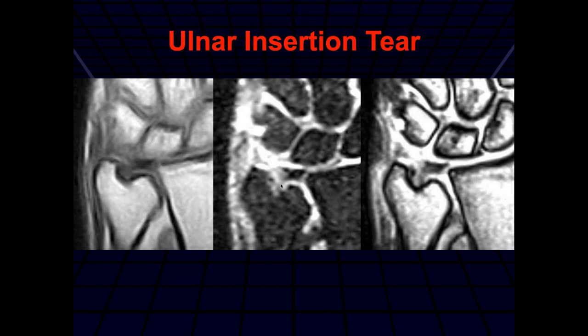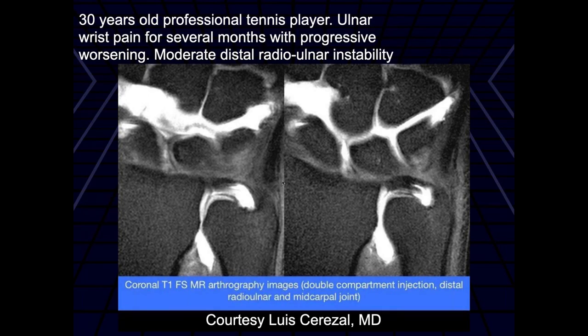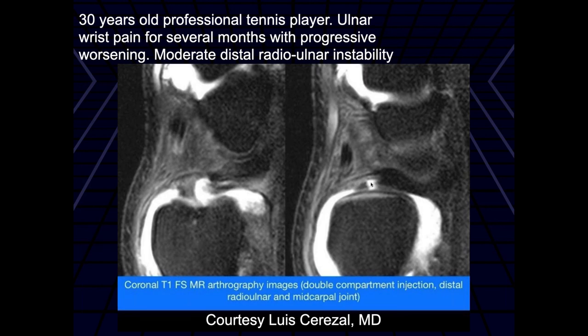So it's also an avulsion tear. 30-year-old professional tennis player, ulnar wrist pain for several months, progressive worsening, moderate distal radial ulnar instability. It looks like this is an arthrogram, and we can see contrast throughout the mid-carpal row as well as extending into the distal radial ulnar joint. On the T1 set images, there's maybe a proximal laminar defect, and that's where the contrast is getting into the distal radial ulnar joint from — an ulnar-sided TFCC tear.